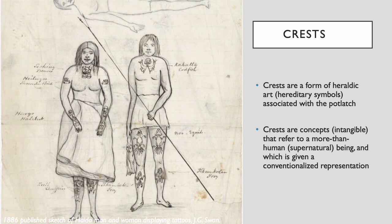Nearly all Haida people were tattooed with their family crests until they were pressured or discouraged from doing so by missionaries. Crests also decorate many other aspects of Haida, Tsimshian, Gitxsan, and Tlingit culture — such as baskets, hats, robes, house front paintings, and of course the totem pole.